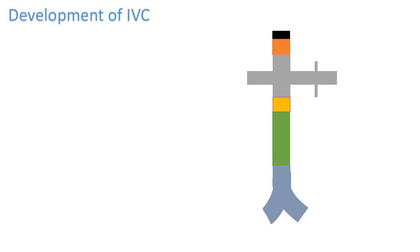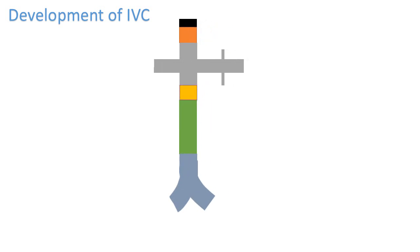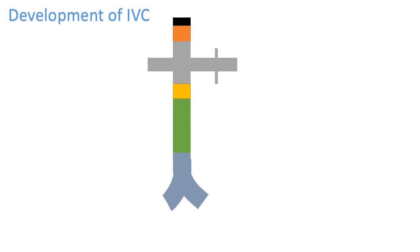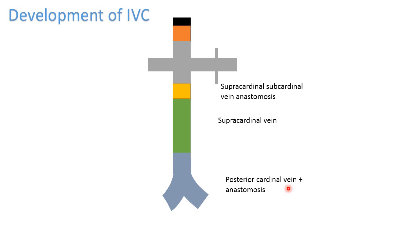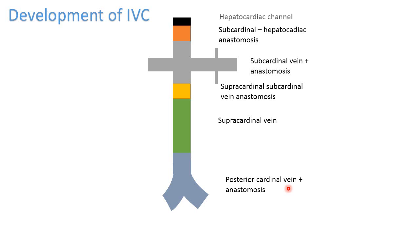Effectively, the final inferior vena cava has five components: the sub-cardinal vein with anastomosis, the supracardinal vein, the supracardinal sub-cardinal anastomosis, the sub-cardinal vein with transverse anastomosis, and the sub-cardinal hepatocardiac anastomosis with the hepatocardiac channel. This explains the development of the inferior vena cava.